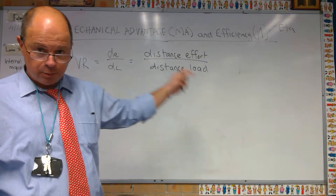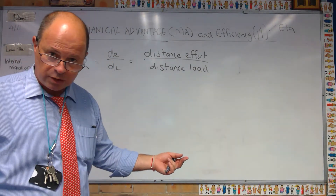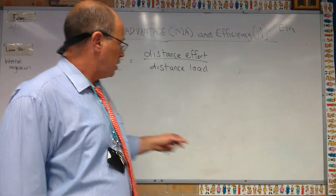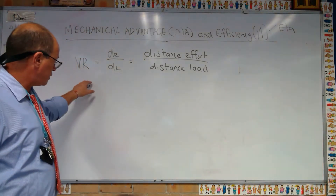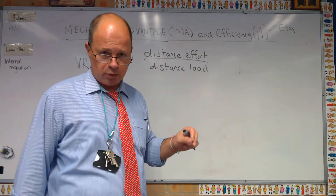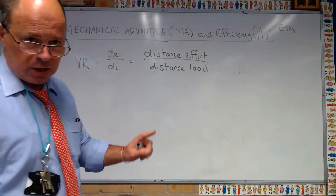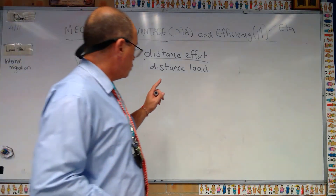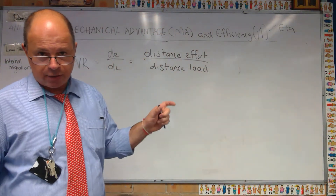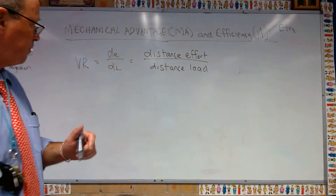That's why the equation just deals with distance. If you had two speeds of the effort arm and the load arm, you could do it as a velocity ratio and that would work fine. Now we're going to look at two ideas: mechanical advantage and also efficiency, and there are equations that relate the two.